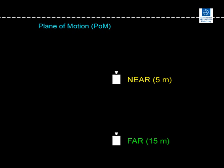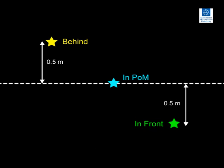To demonstrate the effect of camera distance on perspective error, images were recorded with the camera in two locations. In the first scenario, the camera was positioned near to the plane of motion at a distance of five metres, and in the second scenario, the camera was located far from the plane of motion at a distance of 15 metres. In both scenarios, the optical axis of the camera was orthogonal to the plane of motion. In each camera position, an image was recorded with the performer in three different positions, as shown here.